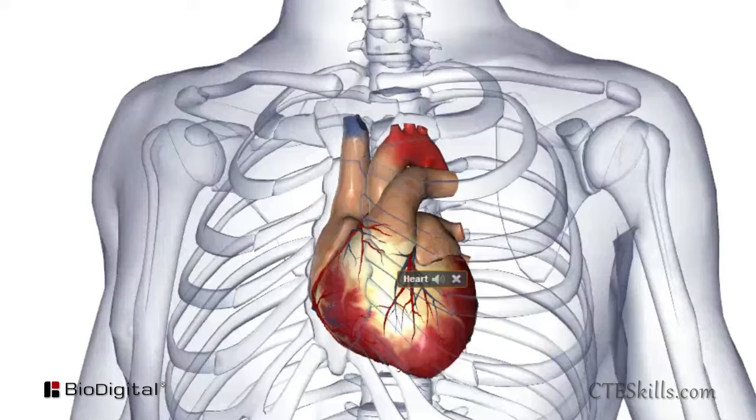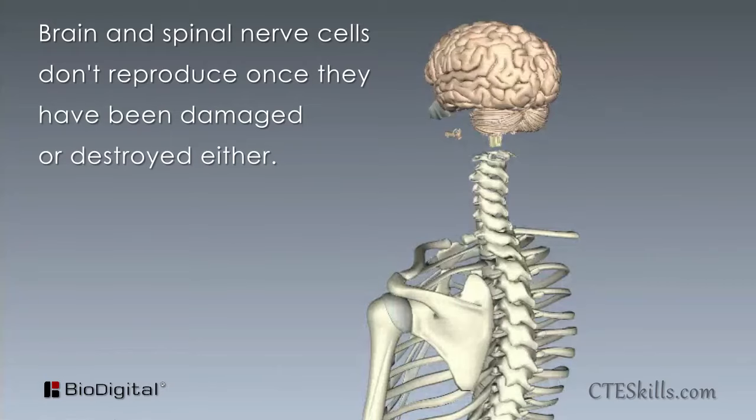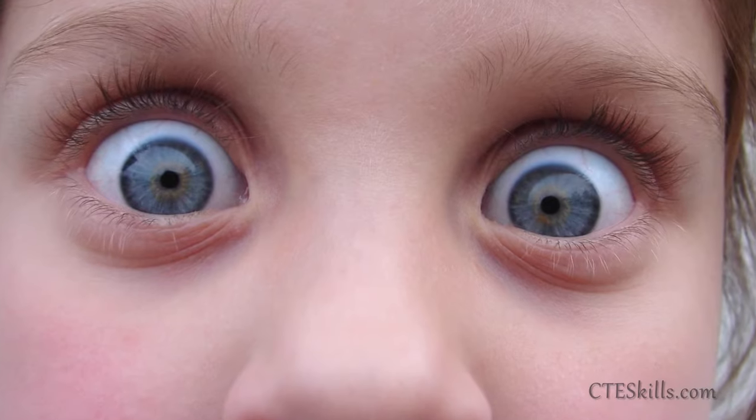except for the cardiac or heart muscle, the cardiac muscle will not reproduce once it's damaged. And like the heart, the brain and spinal nerve cells don't reproduce once they have been damaged or destroyed either. Now that's something to think about, especially when it comes to taking care of yourself.